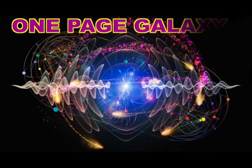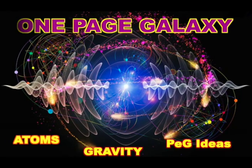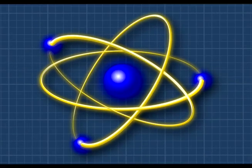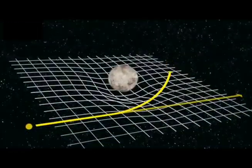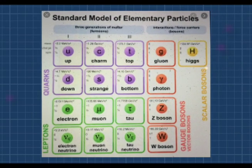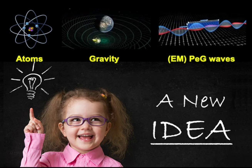Welcome to OnePageGalaxy with Atoms, Gravity, and PEG Ideas. What if our current theories about atoms and gravity are wrong? Today, gravity is defined by these guesses. What does spacetime have to do with gravity? Atoms are defined by complex quantum guesses. What if this theory is crap? This video is about new aha ideas for these.